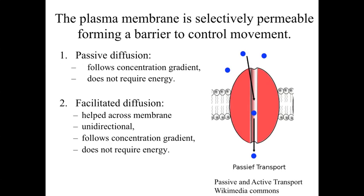An integral membrane protein can be involved with the movement of materials. We can have passive diffusion — essentially a tunnel through the membrane where molecules can move down their concentration gradient, diffusing into the cell by passing through this protein. A slightly more complicated version is facilitated diffusion — still helping molecules across the membrane, unidirectional, following a concentration gradient, but not requiring cellular ATP energy to do so.